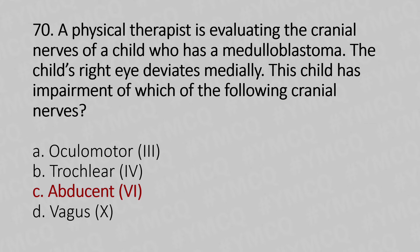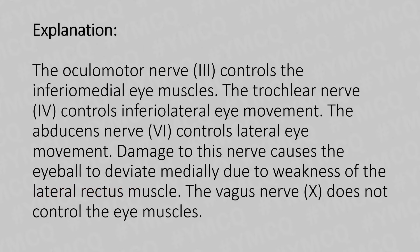Explanation: The oculomotor nerve controls the inferior medial eye muscles. The trochlear nerve controls inferior lateral eye movements. The abducent nerve controls lateral eye movements. Damage to this nerve causes the eyeball to deviate medially due to weakness of the lateral rectus. The vagus nerve does not control the eye muscles.